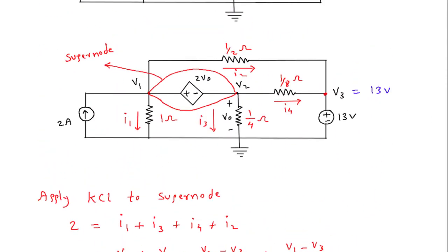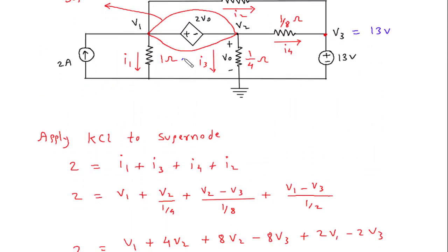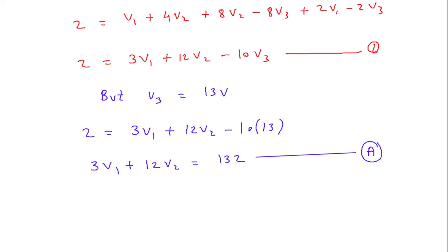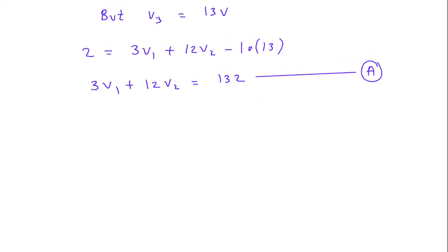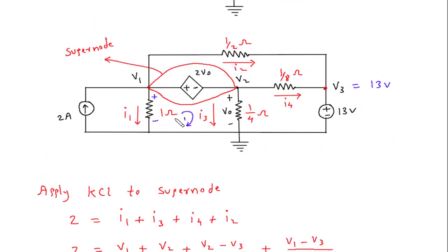Next we will, let's say this is loop number 1. Current flowing in this direction so this will be plus, this will be minus, here is also plus minus, so we will apply KVL to loop number 1, to this loop.